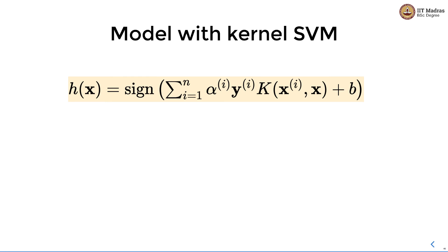There is a small change in inference when we use kernel SVM. In inference we have the sign of the sum over all training examples of alpha i times yi times the kernel function of xi and x, where x is the new data point for which we want to make predictions, plus b. Note that alpha i equals 0 for all non-support vectors, so effectively this calculation happens only for support vectors. We take the new data point, compute the kernel function by calculating the dot product of the new data point with every support vector, and multiply that value with the label and Lagrange multiplier alpha i for that support vector.